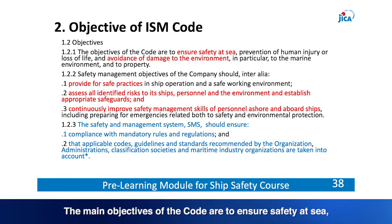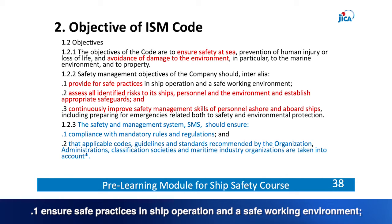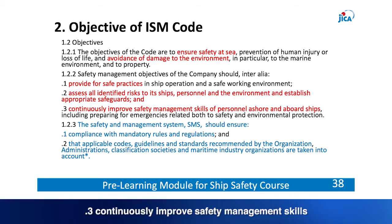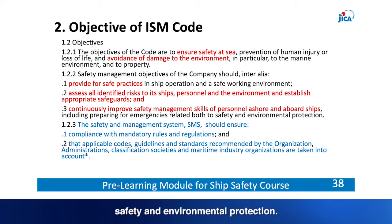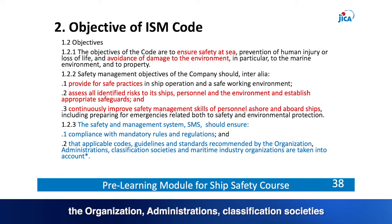The main objectives of the ISM Code are to ensure safety at sea, prevention of human injury or loss of life, and avoidance of damage to the environment. To achieve these, the company shall: 1. Ensure safe practices in ship operation and a safe working environment. 2. Assess all identified risks to ships, personnel and the environment and establish appropriate safeguards. 3. Continuously improve safety management skills of personnel ashore and aboard ships, including preparing for emergencies. The company should develop and implement a Safety Management System (SMS) to ensure compliance with mandatory rules and regulations and applicable codes, guidelines and standards.